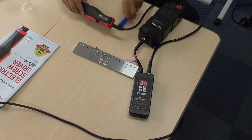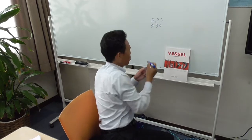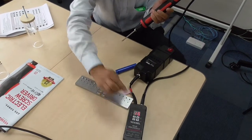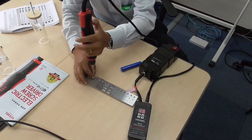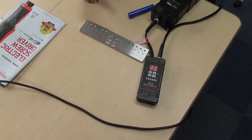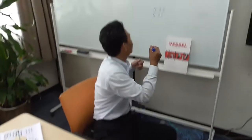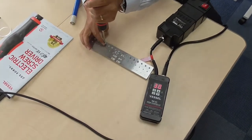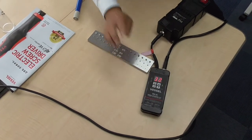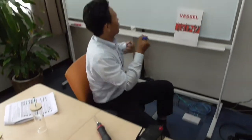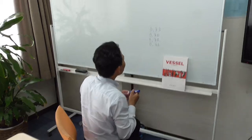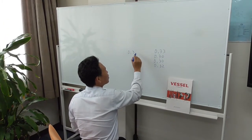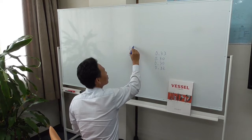This one is 0.30. After measuring several screws, the readings are consistently around 0.30. So the time for fastening the screw is 0.30 to 0.33.